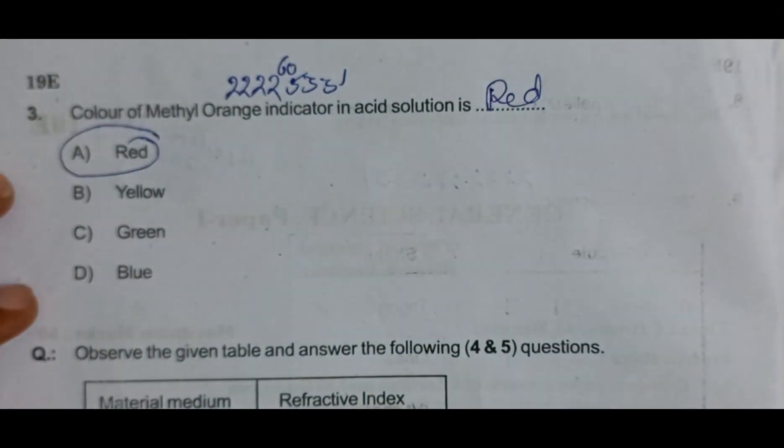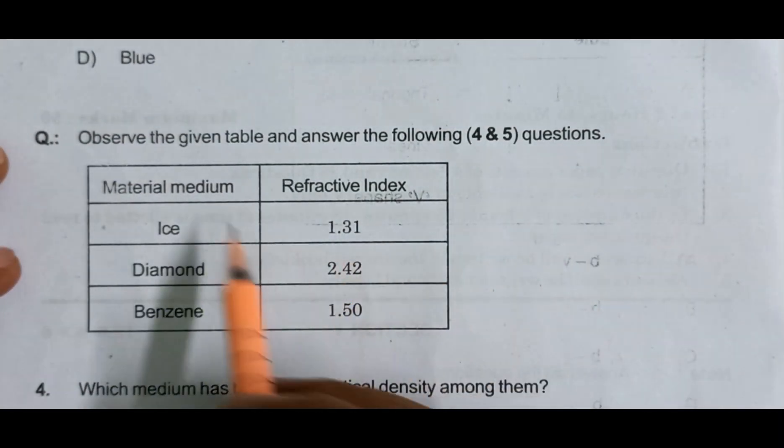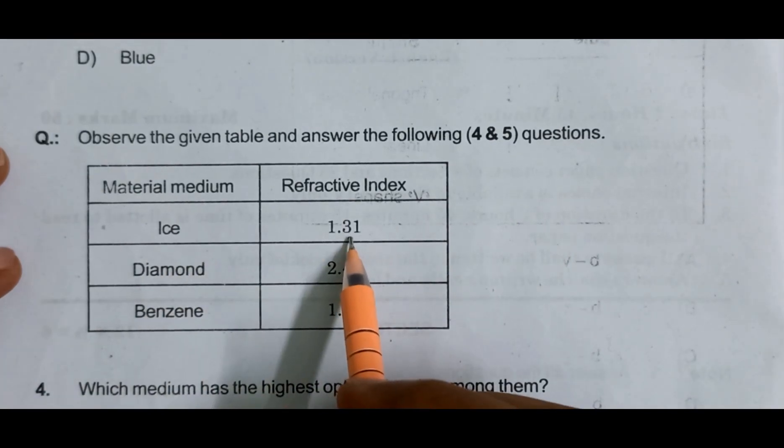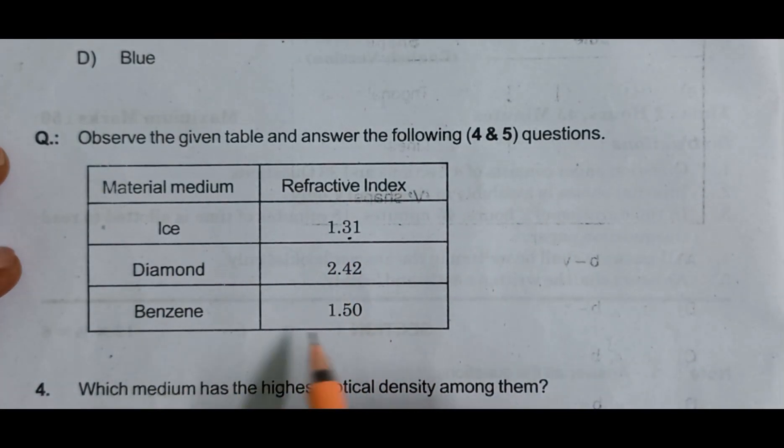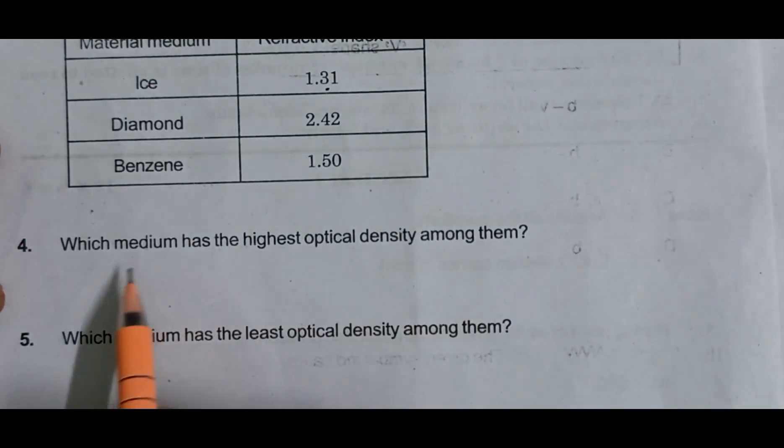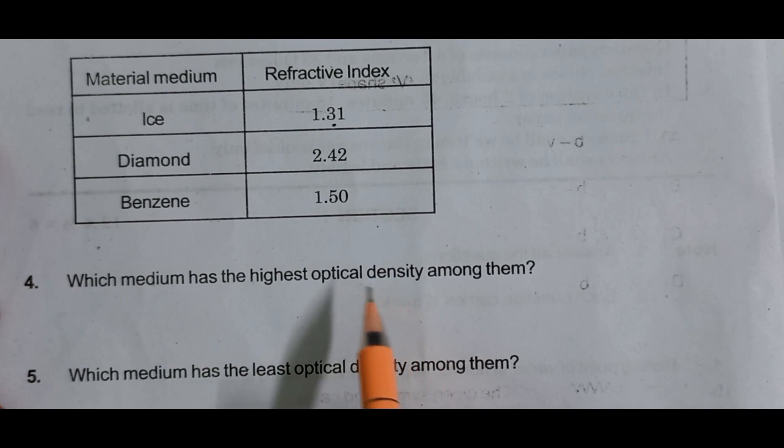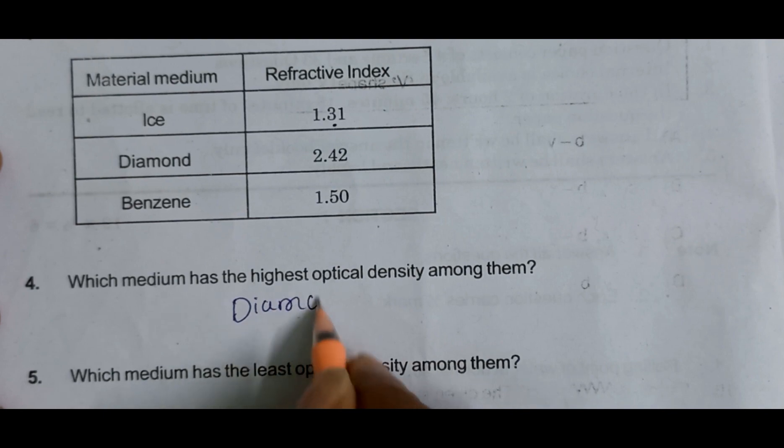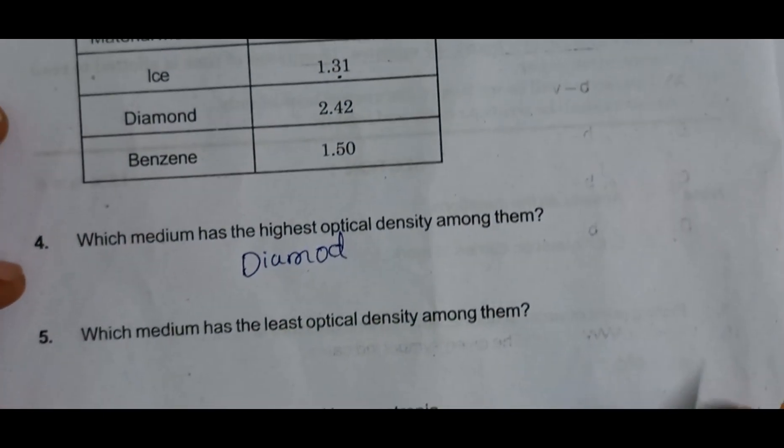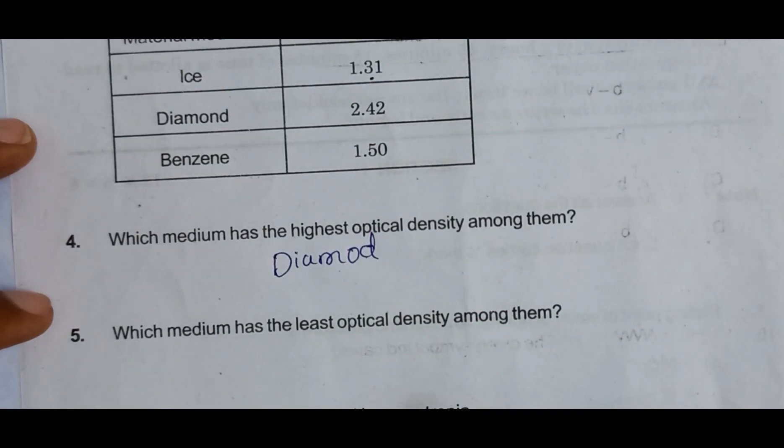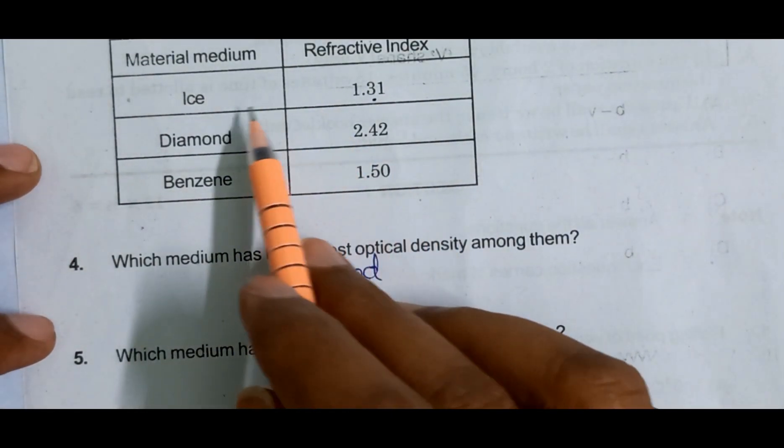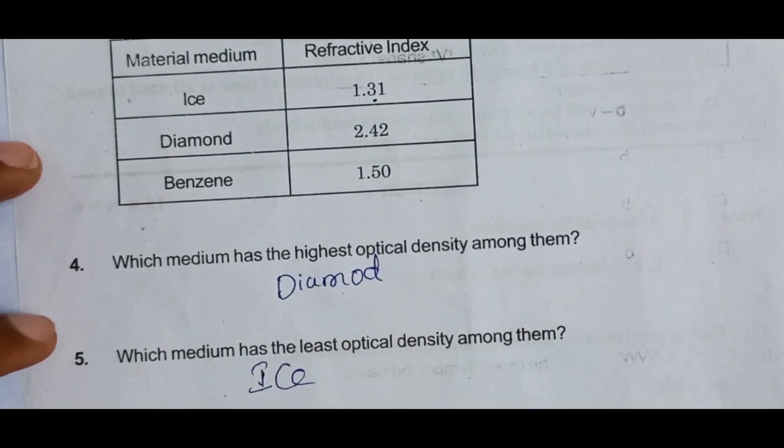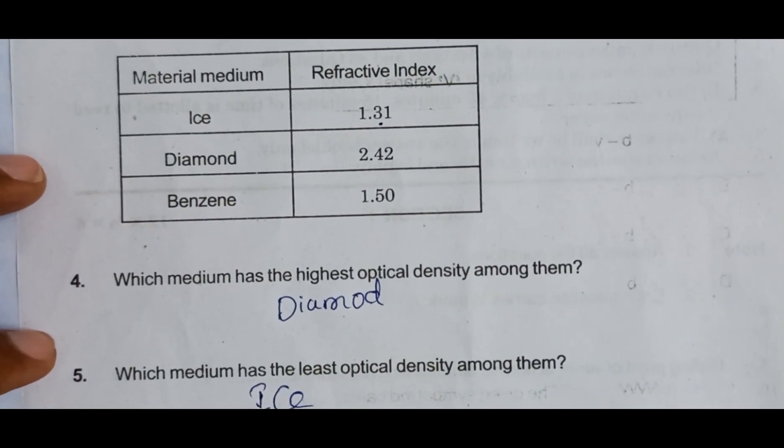Option A. Next, observe the given table and answer the following questions 4 and 5. Ice refractive index 1.31, diamond 2.42, benzene 1.50. Question 4: which medium has highest optical density? Diamond has highest optical density. From the table, which medium has the least optical density? Ice has least optical density.